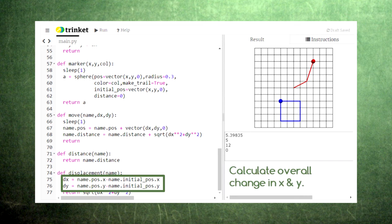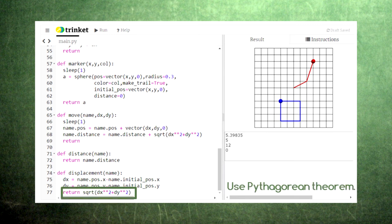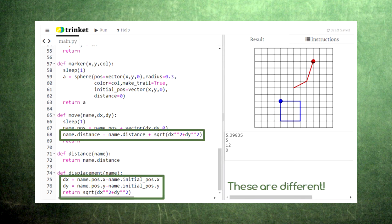Finally, the displacement function calculates the difference between the marker's current x position and its original x position, and the difference between the marker's current y position and its original y position. Then, it uses the Pythagorean theorem to calculate the straight-line displacement between the two points. This is why the displacement value is different from the distance value because the distance includes every step taken by the marker, but the displacement only looks at the beginning and ending points.